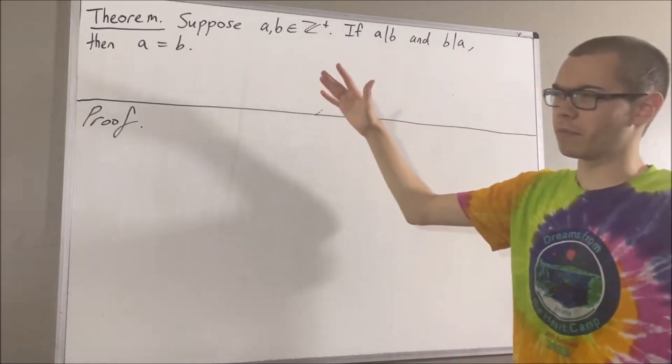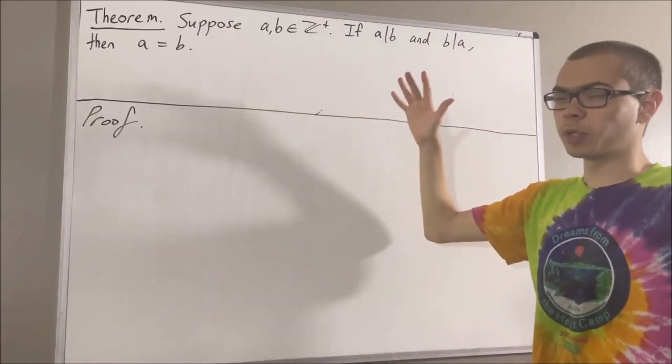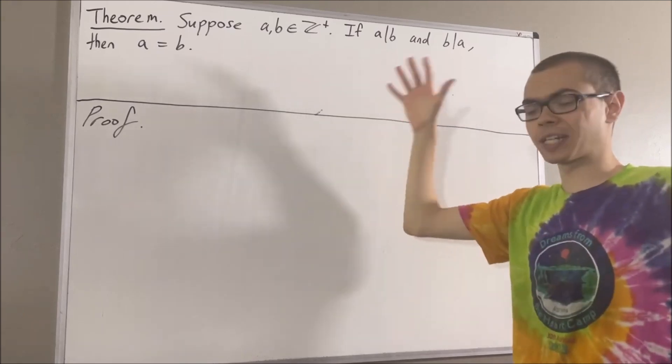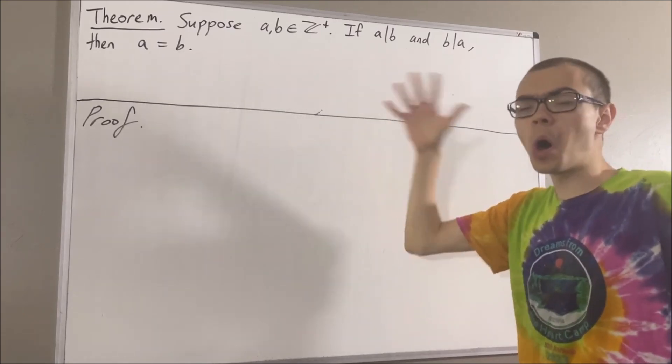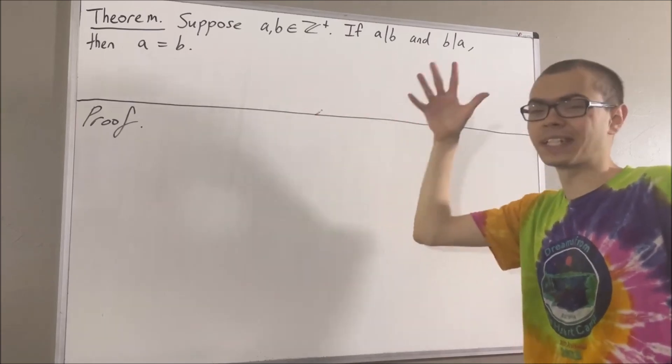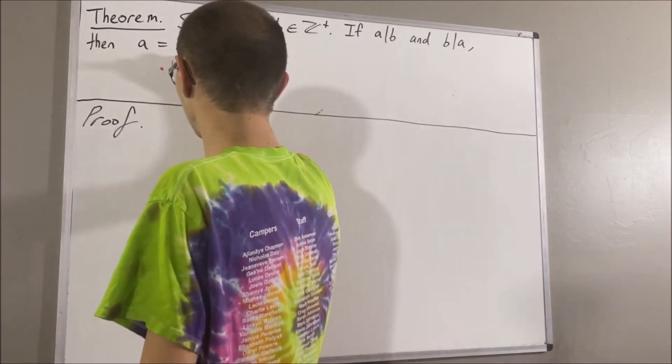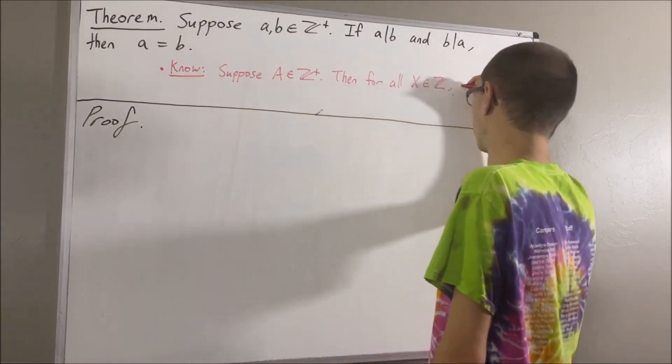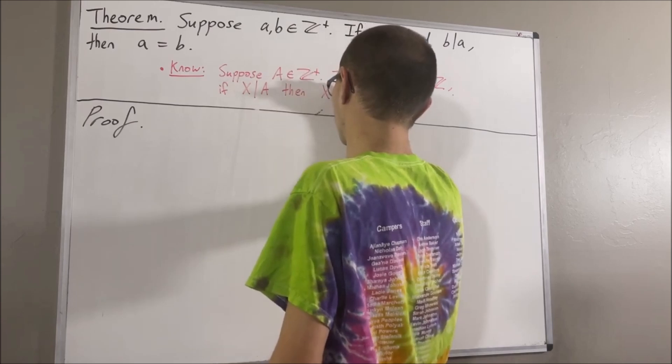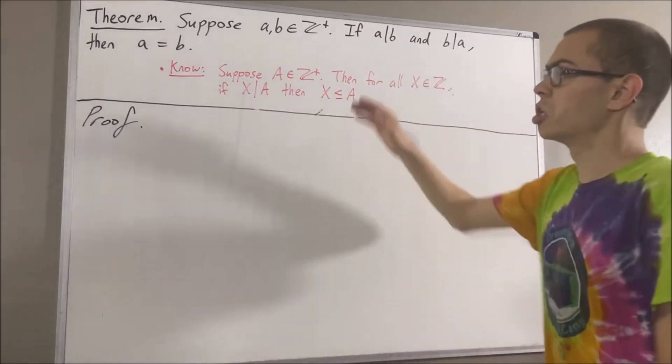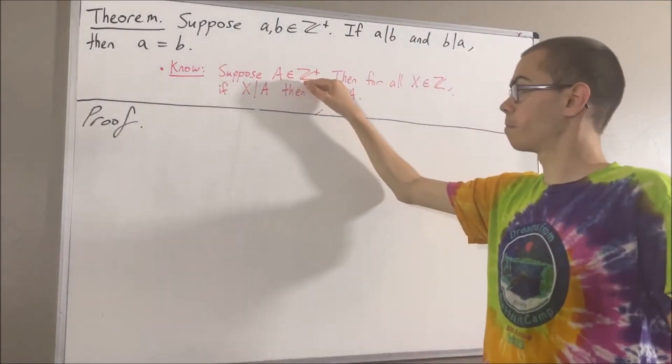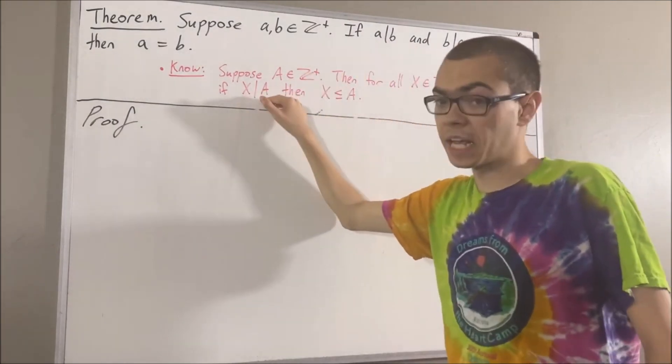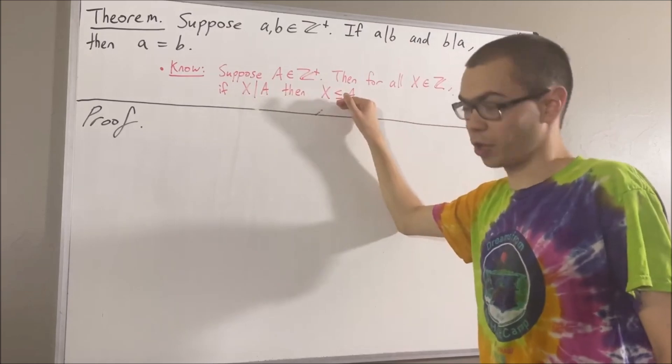In proving this theorem, we are going to use the following preliminary result. Given any positive integer capital A, all divisors of capital A are less than or equal to capital A. More precisely, suppose capital A is a positive integer. Then for all integers x, if x divides A, then x is less than or equal to capital A.